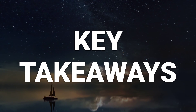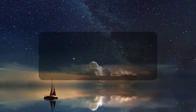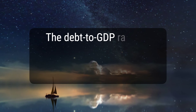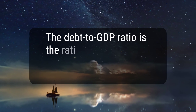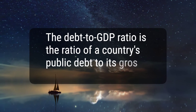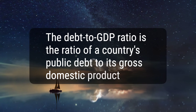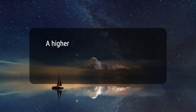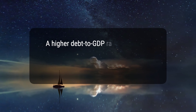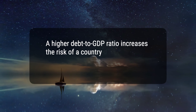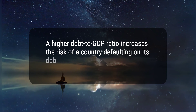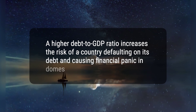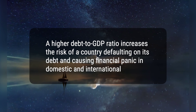Here are two key takeaways. 1. The debt-to-GDP ratio is the ratio of a country's public debt to its gross domestic product. 2. A higher debt-to-GDP ratio increases the risk of a country defaulting on its debt and causing financial panic in domestic and international markets.